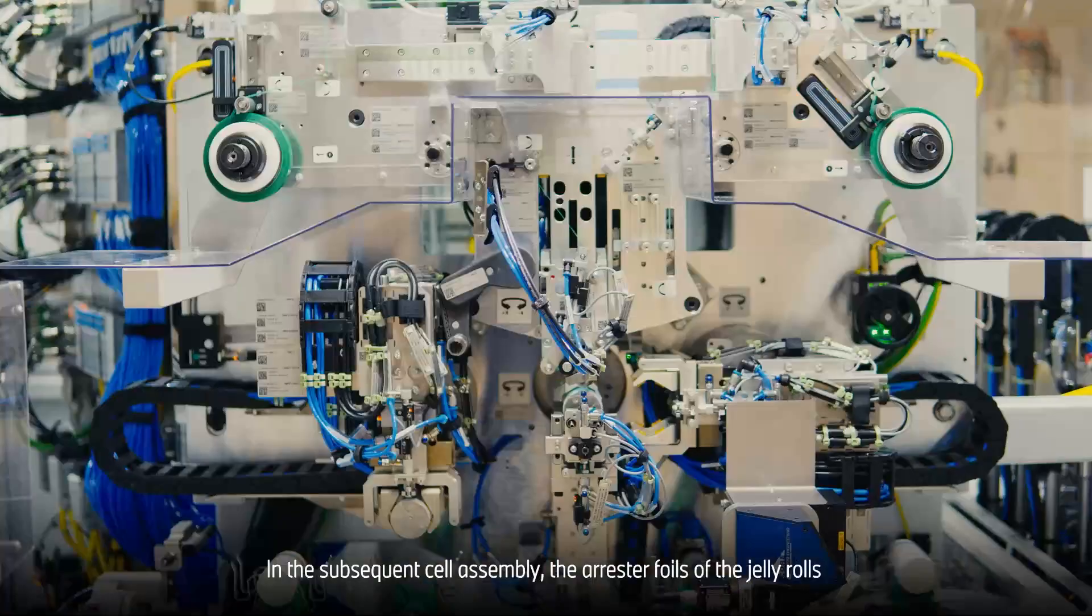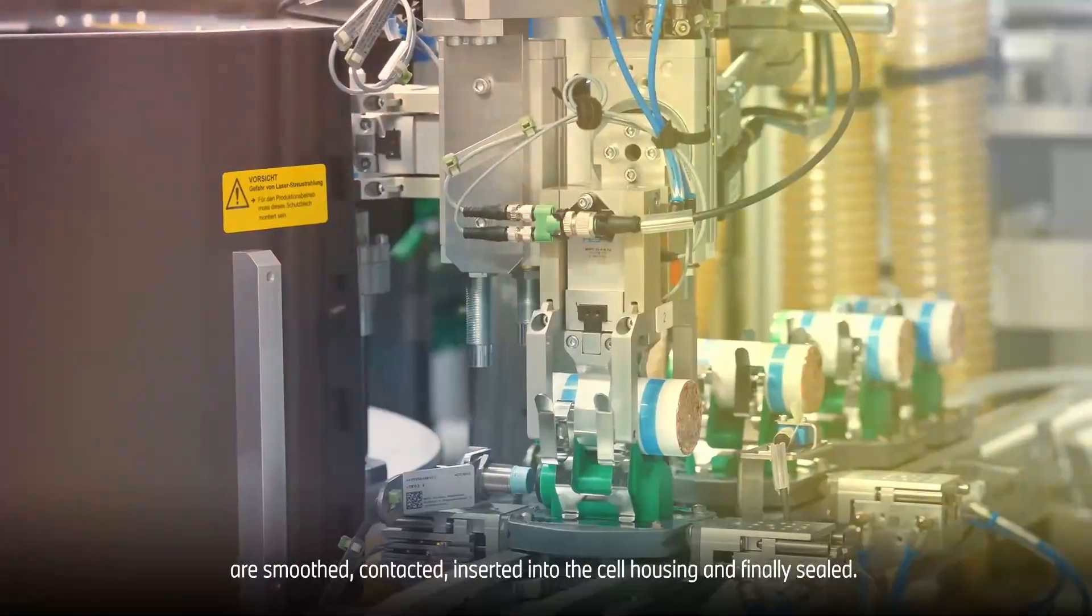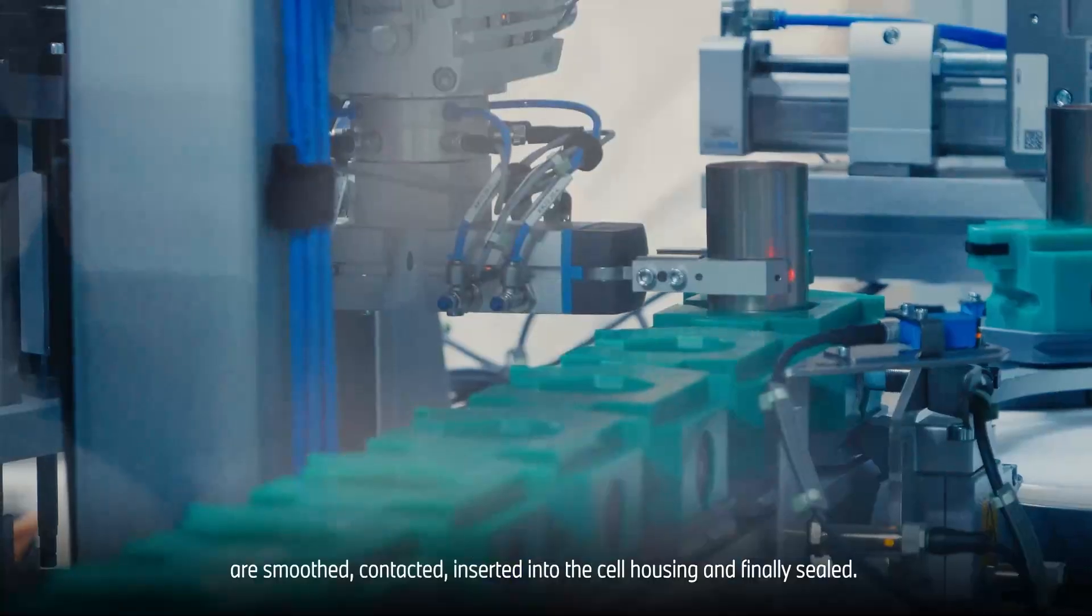In the subsequent cell assembly, the arrestor foils of the jelly rolls are smoothed, contacted, inserted into the cell housing, and finally sealed.